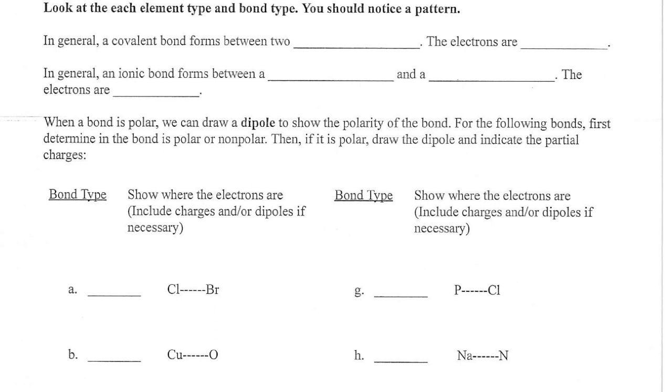So, in general, a covalent bond forms between two nonmetals. If we were keeping track of that, we would have seen that. Typically, it's two nonmetals. Although, you can get some transition metals and some post-transition metals in there. The electrons are shared. An ionic bond forms between a metal and a nonmetal. But specifically, alkali or alkaline earth metals. But we'll just say a metal and a nonmetal. The electrons are transferred.